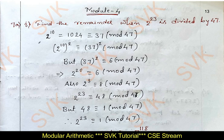In that, I am discussing question number 7, question number 7a: find the remainder when 2 power 23 is divided by 47. We can start with a simple number here to find out the remainder of 2 power 23 divided by 47.